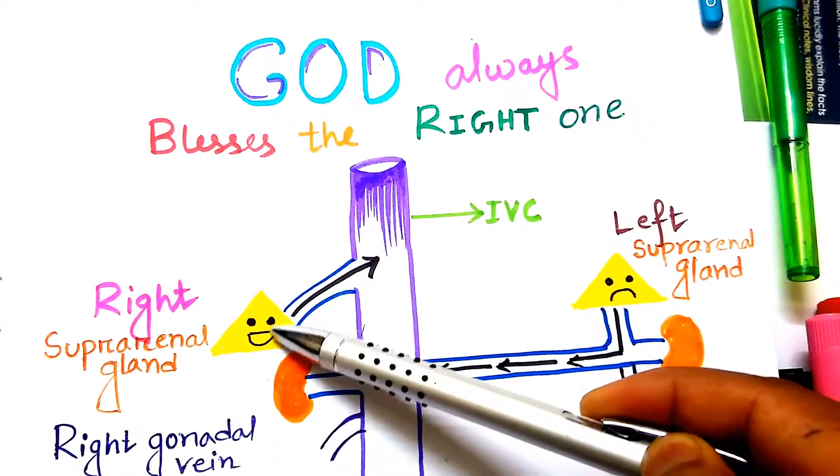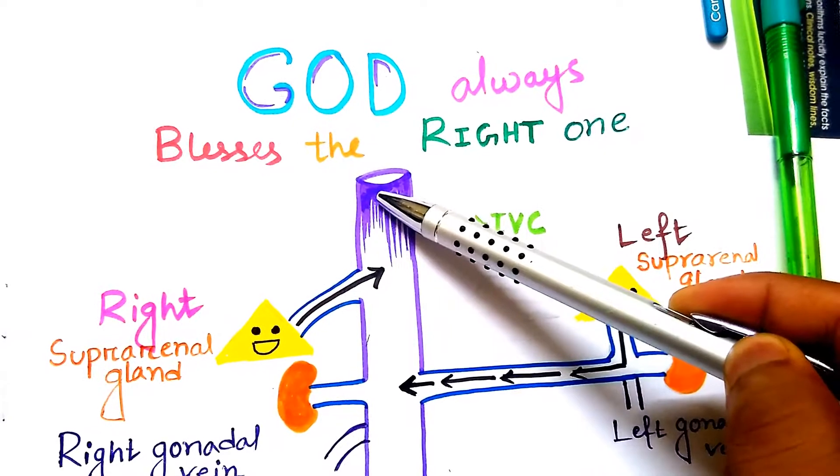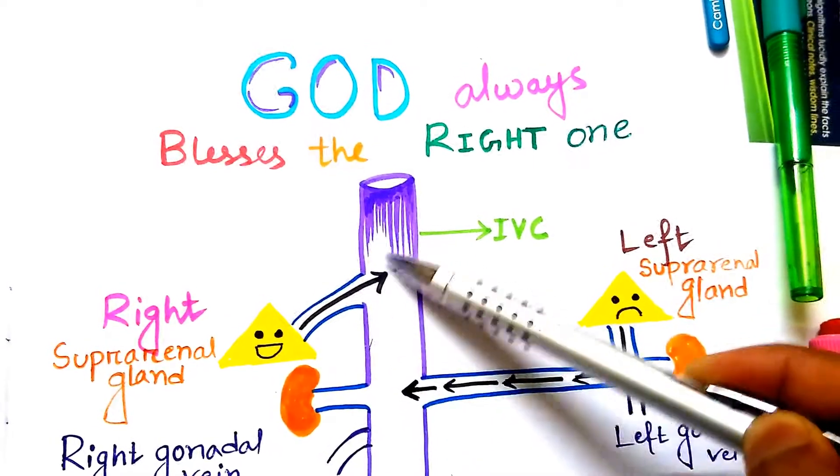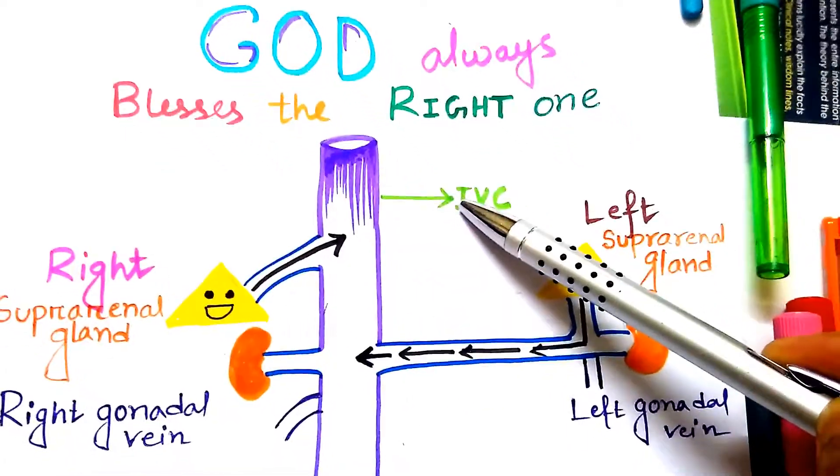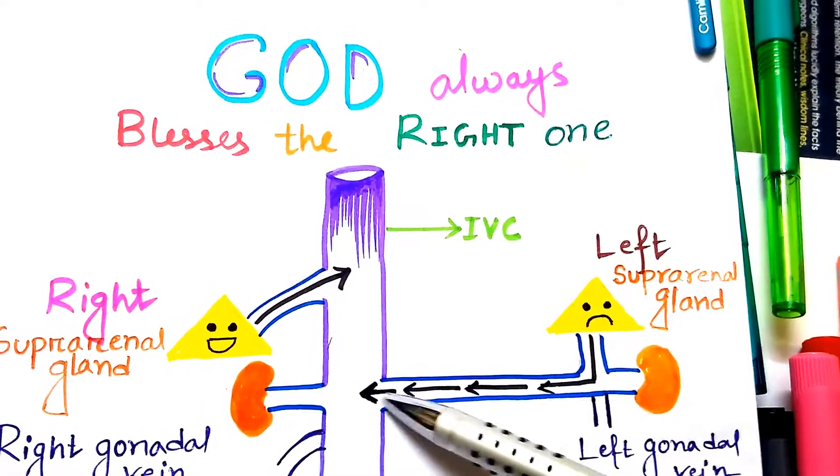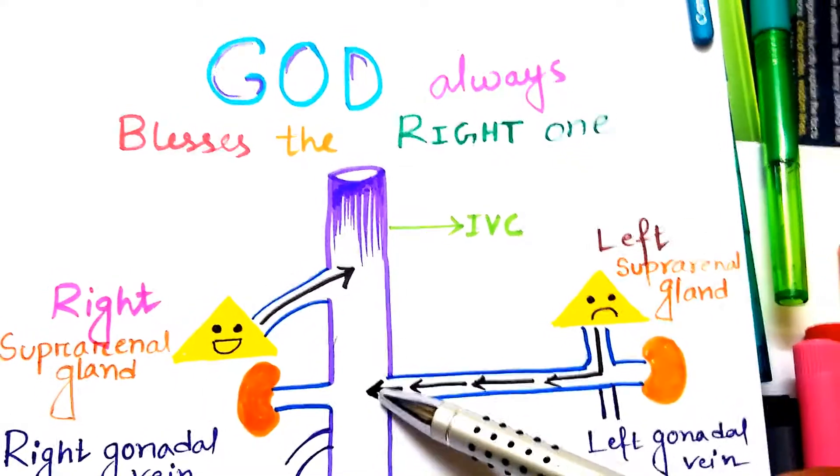Now he has to cover less distance to go into his destiny, that is the inferior vena cava. But the left or the wrong one has to cover long distance to go into his destiny.